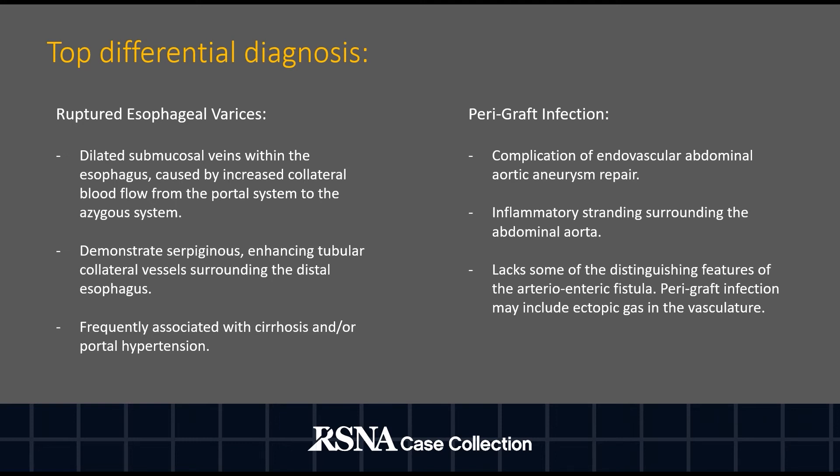Regarding paragraft infection, this is a complication of endovascular abdominal aortic aneurysm repair in which inflammatory stranding would be expected surrounding the abdominal aorta. These infections lack some of the distinguishing features of the arterioenteric fistula and may include ectopic gas in the vasculature.